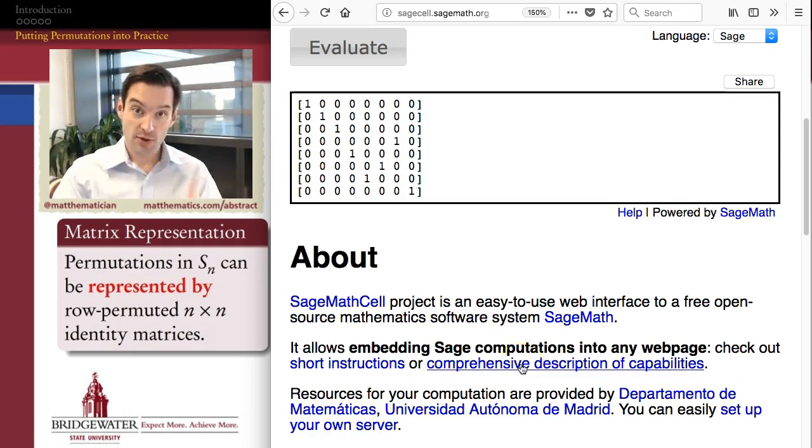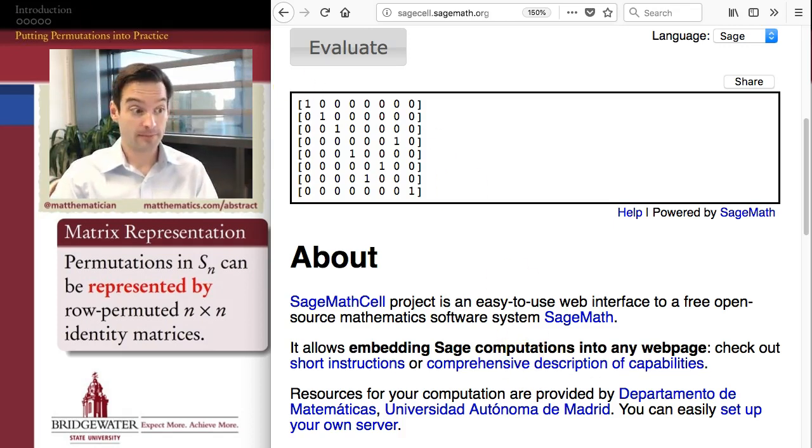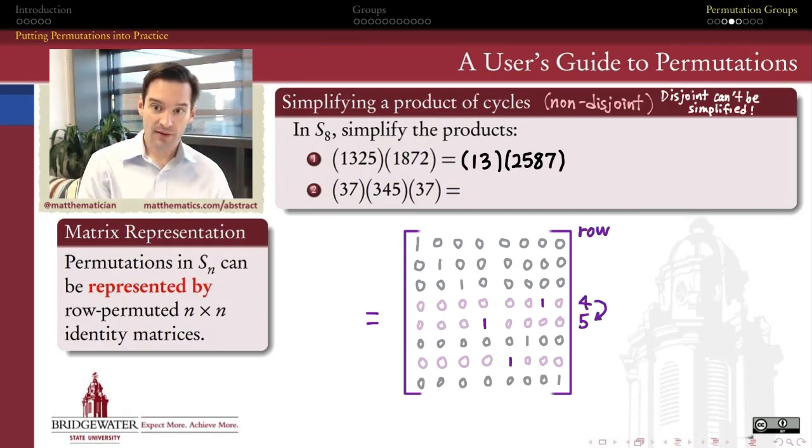This is the matrix that's going to represent the product of these three cycles that I'm trying to simplify. And so here's that matrix. Now I just have to figure out what product of cycles, what permutation, this matrix is telling me. I'll just look at which rows are not in the place that we would expect them to be in the identity matrix.